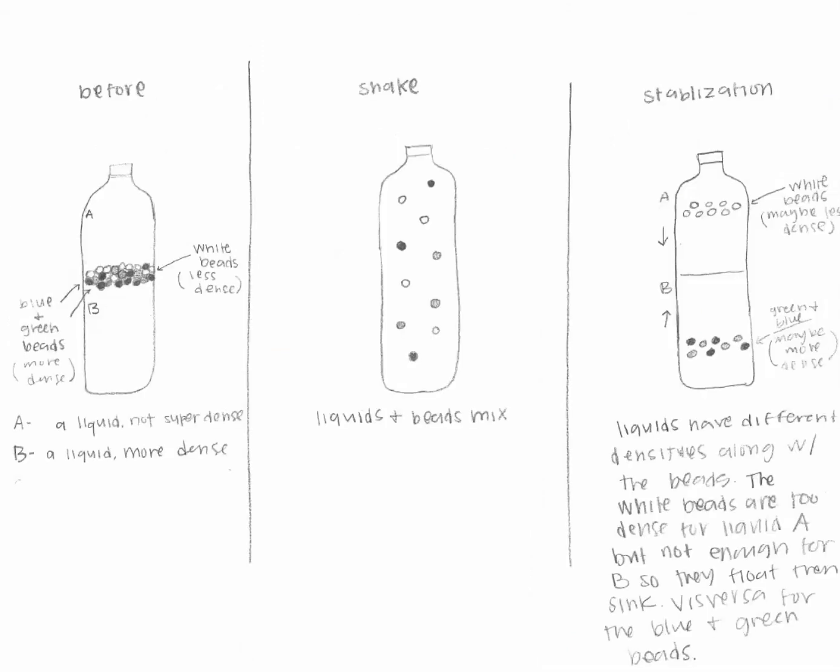Here's another student example of the model for why the beads behave as they do. Again, establishing two different types of liquids, and two different beads, and how they relate to each other in density, showing the mixture of all four materials, and then a further explanation of why you will see some rise and sink, and then eventually at the end, return to the before image.